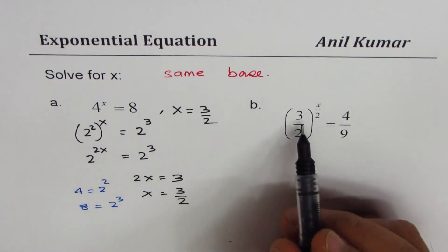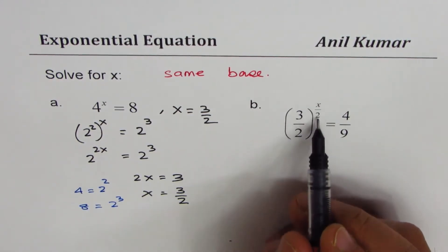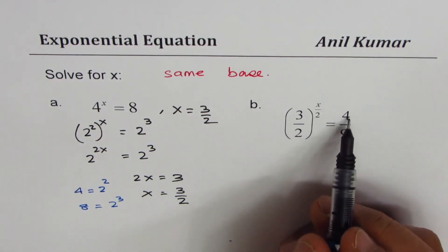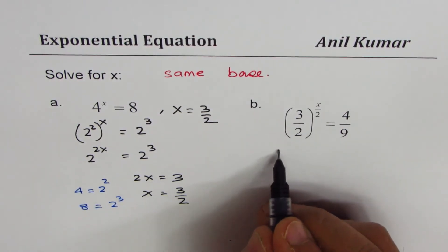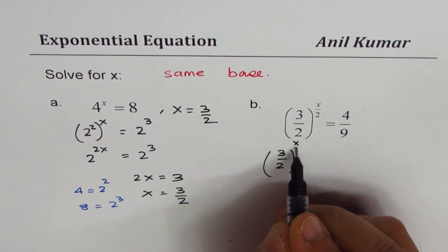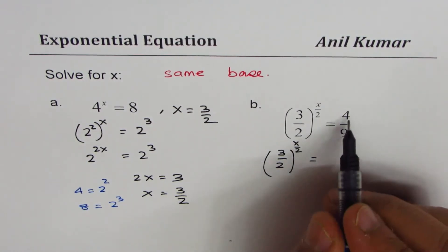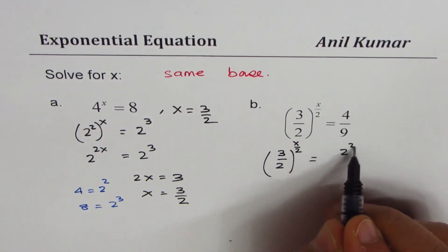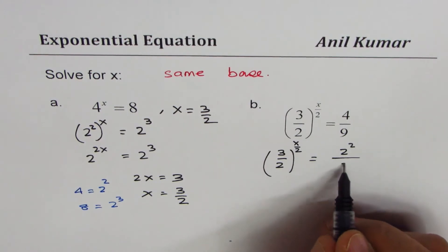Here we have (3/2)^(x/2). 4 could be written as 2^2, right? So let's rewrite this equation: (3/2)^(x/2), and 4 can be written as 2^2 and 9 can be written as 3^2.